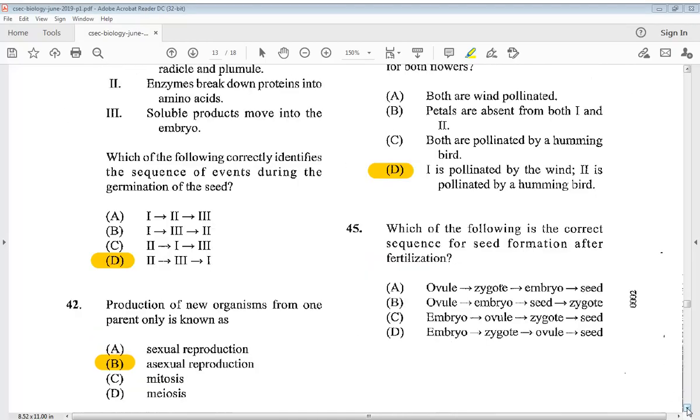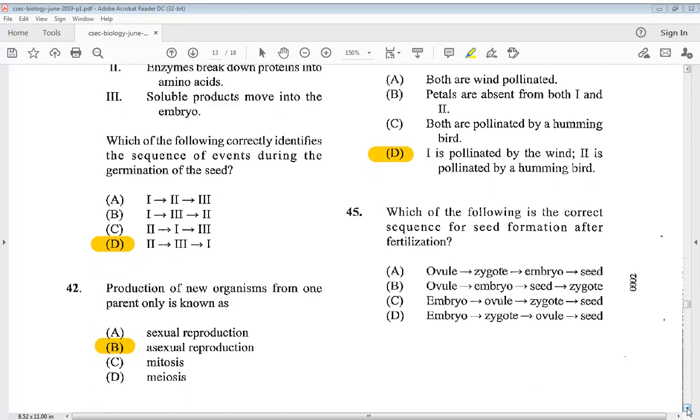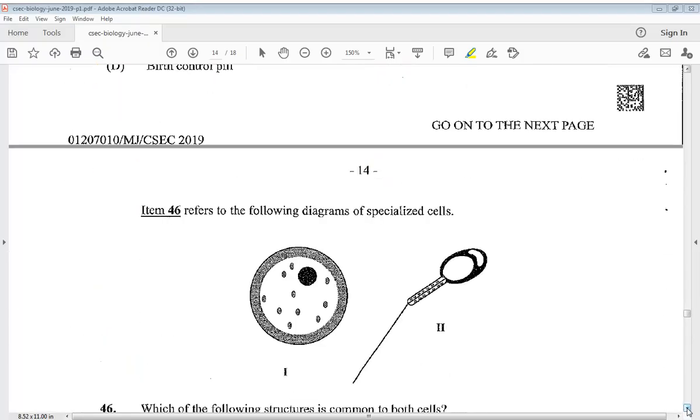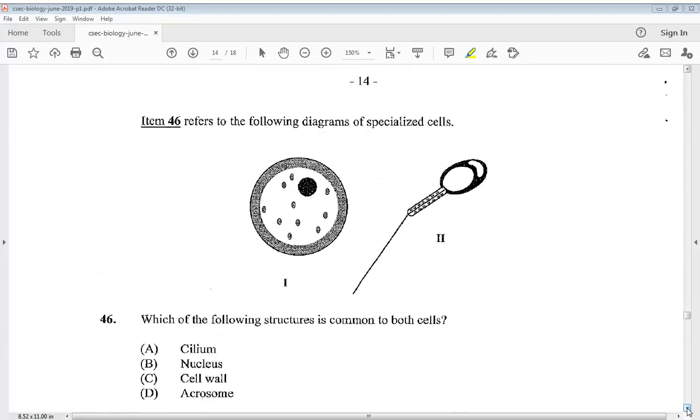Question 45 says which of the following is the correct sequence for seed formation after fertilization. I want you to tell me the answer for this one down in the comment section below, so you have gotten two to do so far. Item 46 refers to the following diagrams of specialized cells. Which of the following structures is common to both cells? So we know it is A, nucleus.